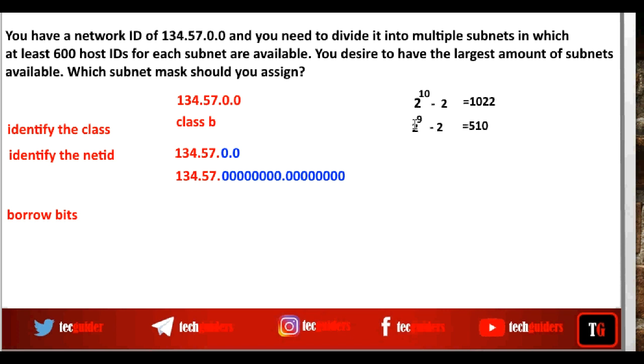So by having 9 bits in the host ID part, we can support only 510 hosts. This is not enough. So we should have at least 10 bits in the host ID part. If we increase the number of bits in the host ID part, then the amount of subnets available will be reduced. Here we need to have the largest amount of subnets available. So we will fix 10 bits in the host ID part.